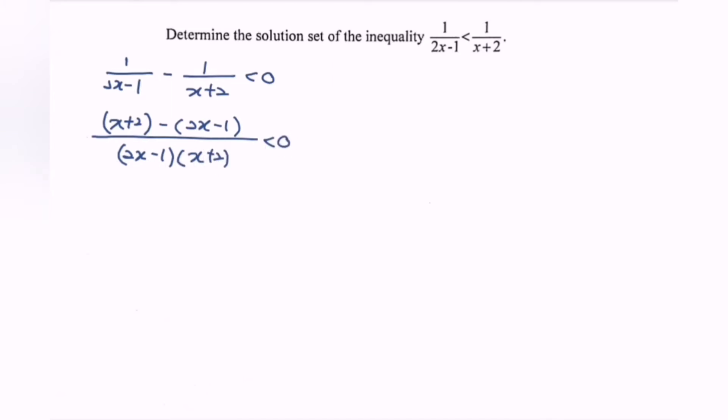Next is to simplify the situation. So we have x minus 2x plus 2 plus 1 over 2x minus 1 multiplied with x plus 2.